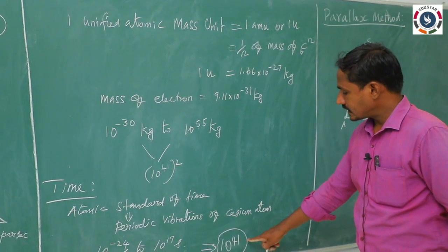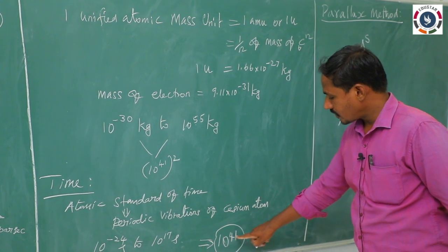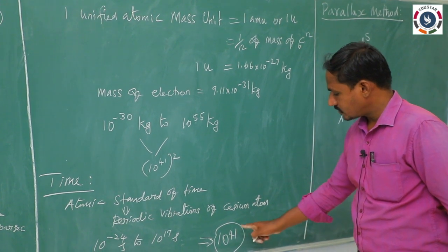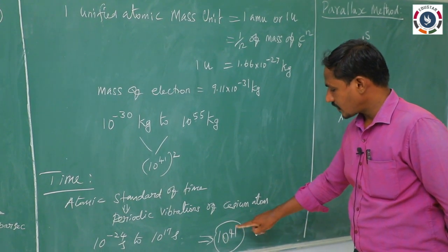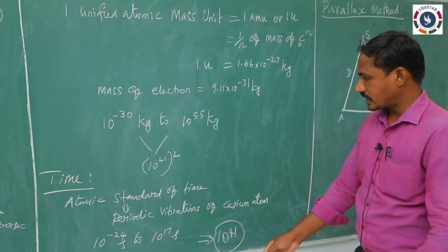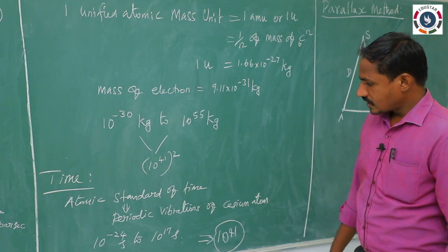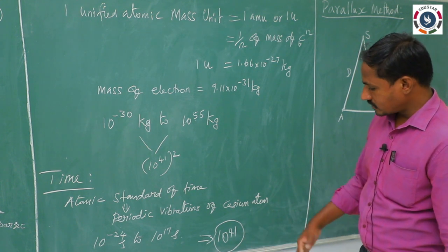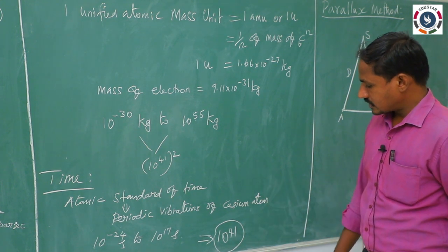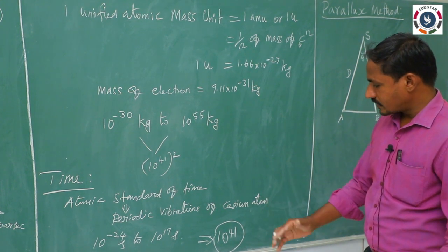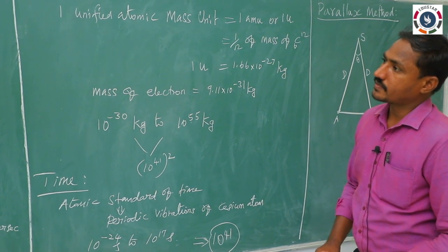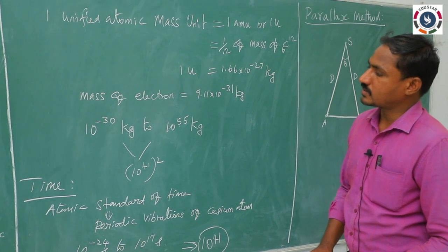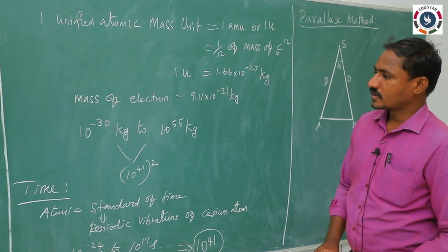It is the beauty of coincidence between length, mass, and time — all are in the order of 10⁴¹. In the case of mass it is (10⁴¹)², and in the case of length and time it is 10⁴¹. This is the range from atomic scale to the universe. These three — length, mass, and time — are very, very important.